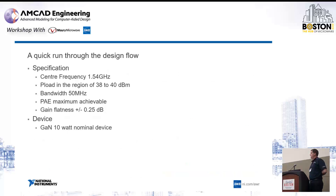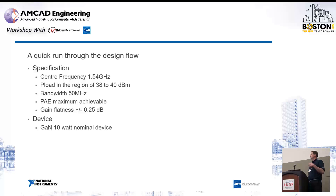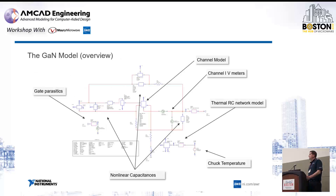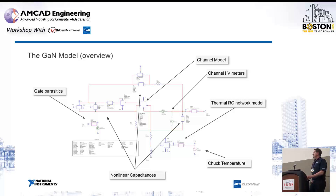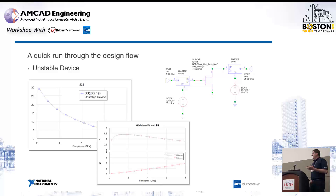The idea here was to do a first cut design: center frequency 1.54 GHz, about 10 watts of power, 50 MHz bandwidth, maximizing efficiency, gain flatness of a quarter dB, using a 10-watt nominal GaN device. The model includes non-linear capacitances, gate parasitics, thermal modeling via a thermal RC network model, and channel modeling. Then we started looking at the actual design flow.